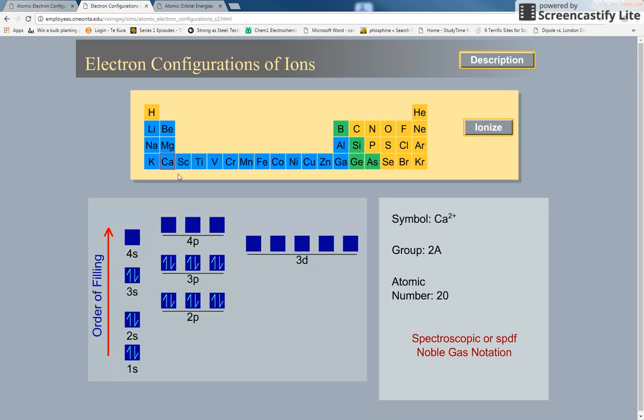If I go to scandium, scandium has got the 3d1 4s2. So will it lose those? Will it lose that one? Will it lose all three? Scandium in this case actually loses all three to form the scandium 3 plus ion. That's the most common ion that will form.